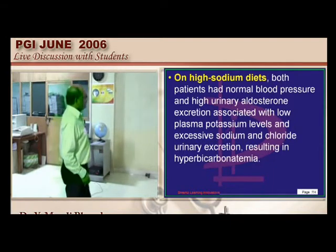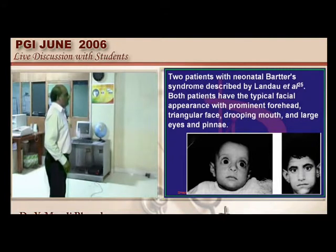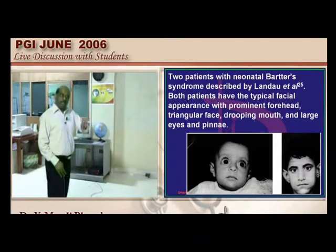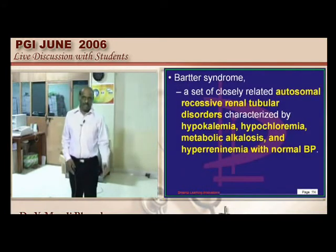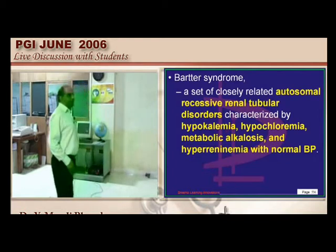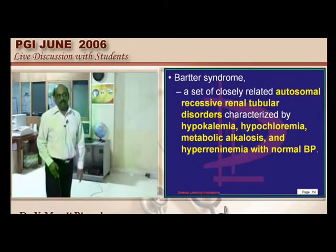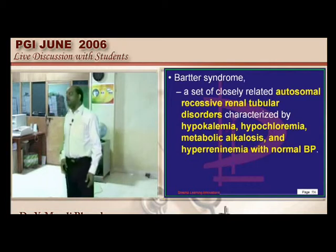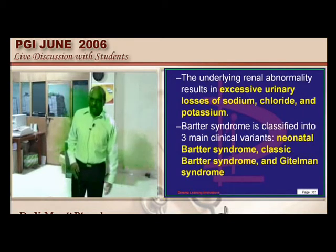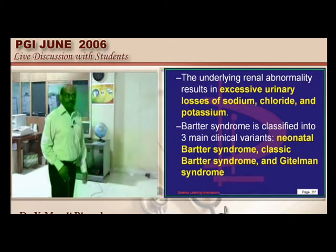Bartter syndrome features: hypokalemia, hypochloremia, metabolic alkalosis, hyperreninemia, but normal blood pressure. The kidneys lose chloride in the urine due to failure of reabsorption at the distal tubule and thick ascending limb of loop of Henle; sodium and potassium are also lost. Both sodium and potassium are lost because the primary genetic defect is failure to reabsorb sodium and chloride.